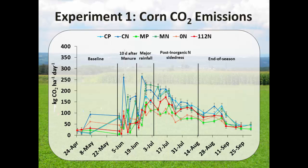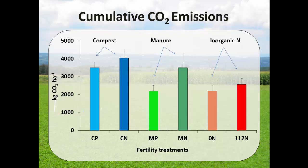This figure shows carbon dioxide emissions over time. Emissions were low in the beginning of the growing season; as we go forward, soil temperature increases, the crop was growing fast, and we had higher emissions in the middle of the growing season, then lower toward the end. For cumulative CO2 emissions, we saw no differences between N-based and P-based compost, although there was a trend toward higher emissions in N-based. For manure, we saw higher emissions with N-based manure than P-based, and it was not significantly different between higher inorganic N versus zero control.